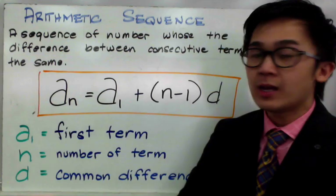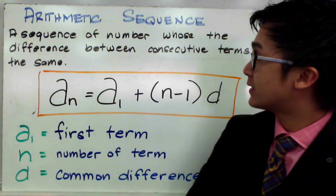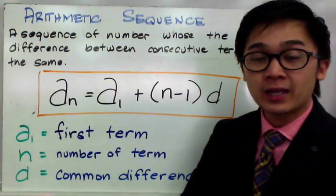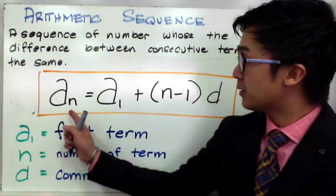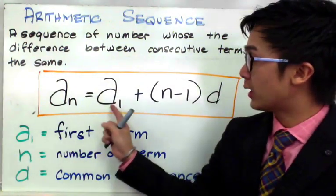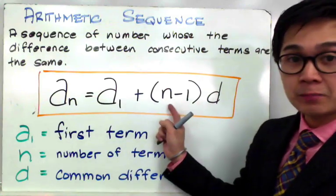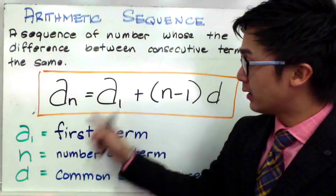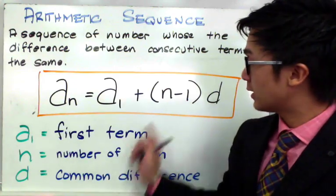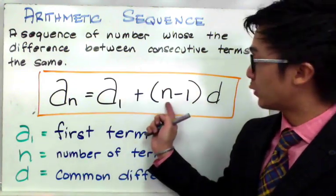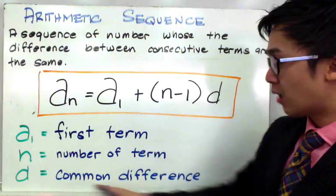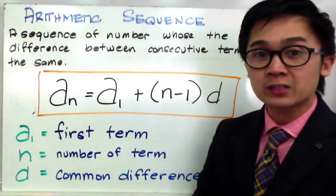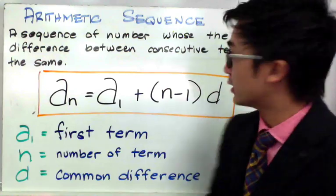An arithmetic sequence, by definition, is basically a sequence of numbers whose difference between consecutive terms are the same. It's given by the formula: a sub n equals a sub 1 plus the quantity of n minus 1 times d. In this formula, a sub 1 is the first term of the sequence, n is the number of the term, and d is the common difference. We're going to use this formula in evaluating some problems involving arithmetic sequences.